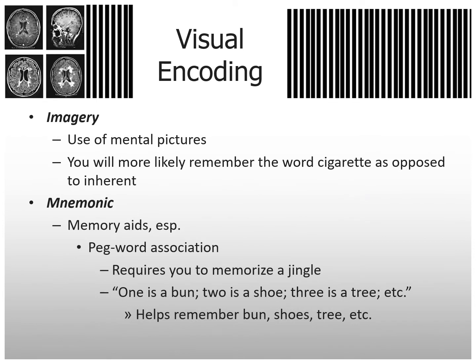Visual encoding: imagery is just the use of mental pictures. You'll more likely remember the word 'cigarette' as opposed to 'inherent' because if you can visualize something, you're more likely to remember it.